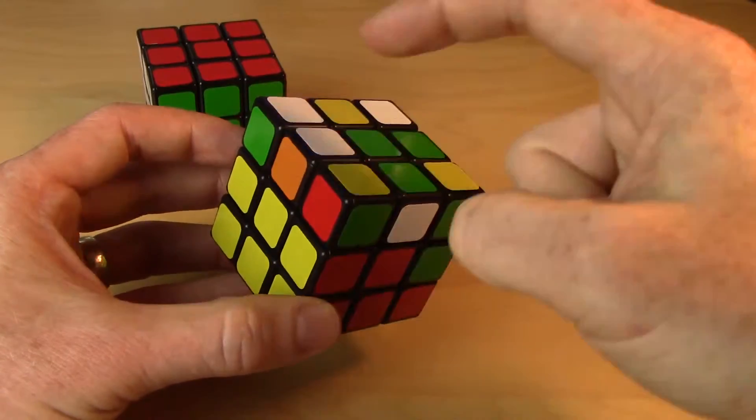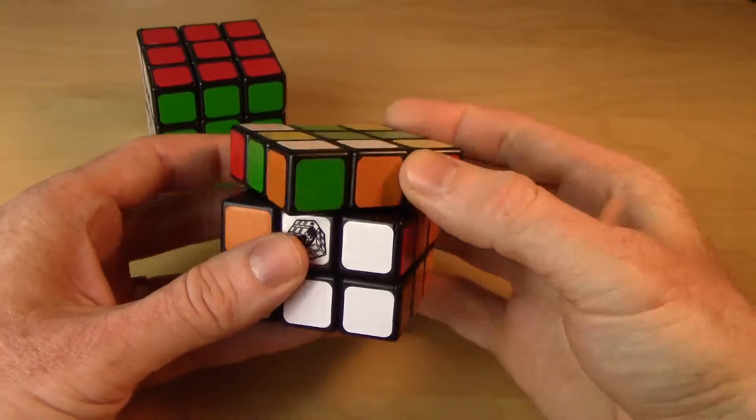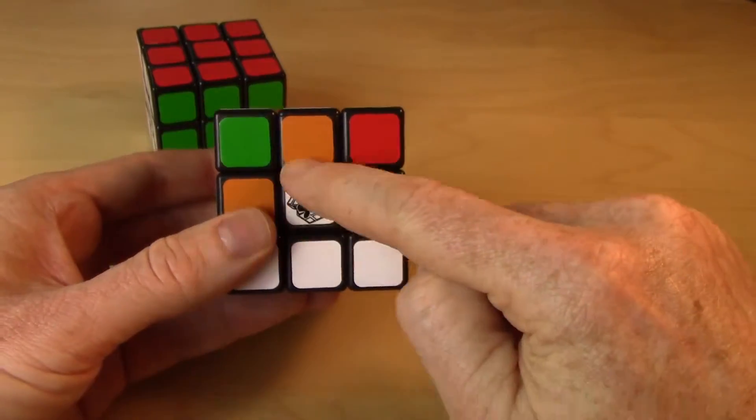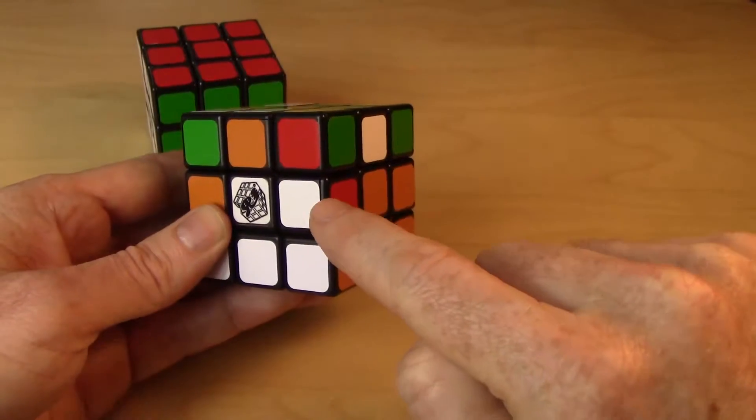There's a white-orange, that's going to go back here. So I'll send it around. And we'll line the color up. So white on the top, white on the front. I need to send that to the right.